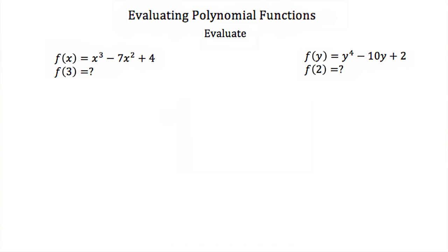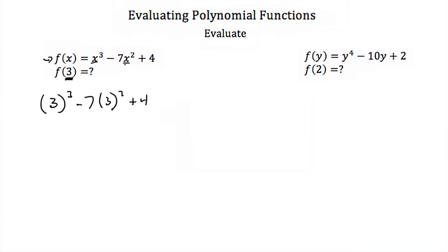Now that we know how to find polynomial functions, let's talk about evaluating them. Say we were given f(x) = x³ − 7x² + 4, and we wanted to know the value of this function when x = 3. An easy way to evaluate this is to just plug in 3 for x. So we get 3³ − 7(3²) + 4. Well, 3³ is 27, and 3² is 9.